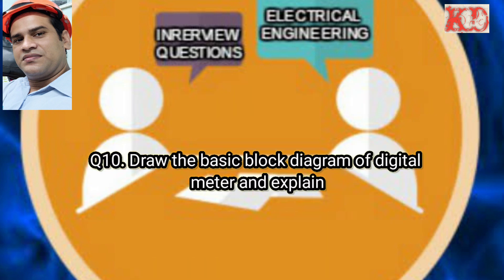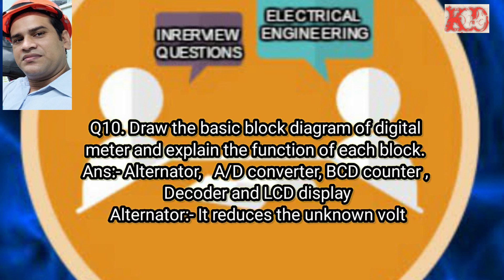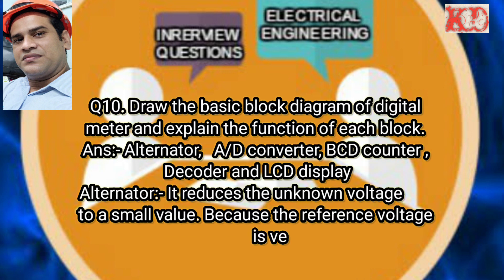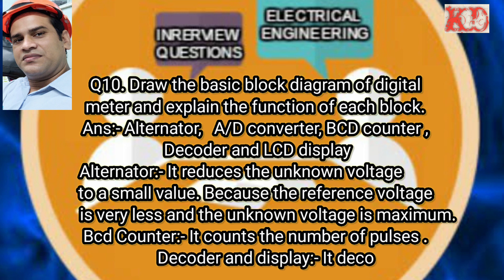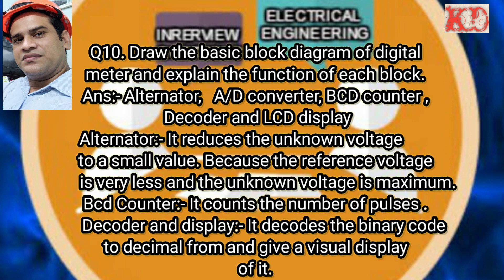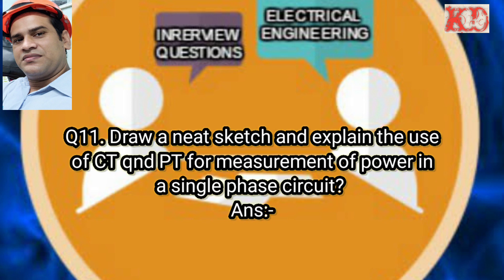Question number ten: Draw the basic block diagram of a digital meter and explain the function of each block. Blocks: attenuator, analog-to-digital converter, BCD counter, decoder, and LCD display. The attenuator reduces the unknown voltage to a small value since the reference voltage is very small. The analog-to-digital converter converts the analog signal from the attenuator to digital signals. The BCD counter counts the number of pulses in binary. The decoder and display decode the binary code to decimal form and give a visual display.